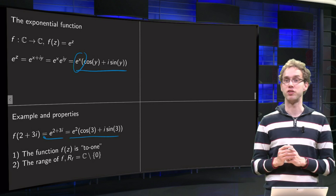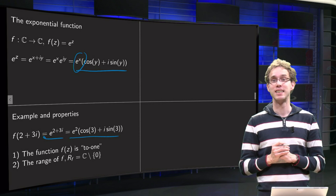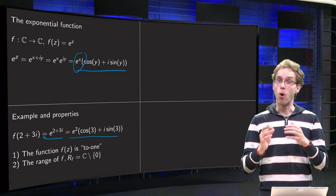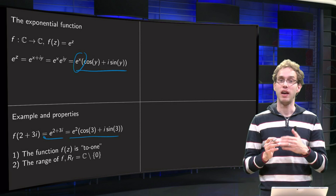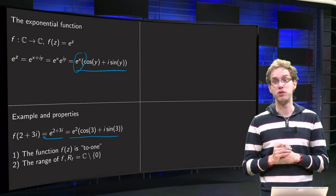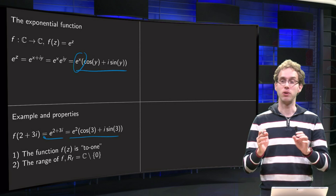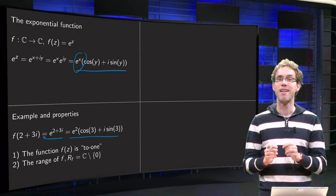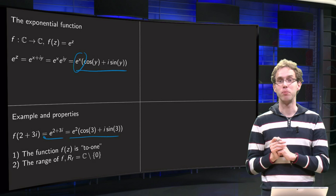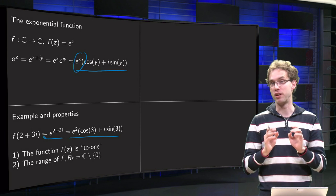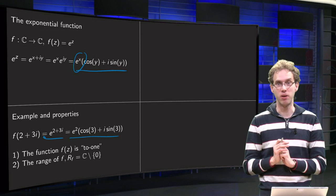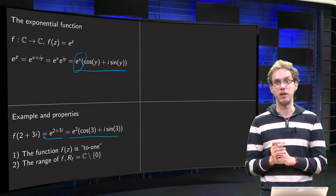The norm of f of z equals e to the power x, and that can take almost any value. x is allowed to vary between minus infinity and infinity, so you can get any norm you like, except you cannot get 0, because e to the power x is never equal to 0.